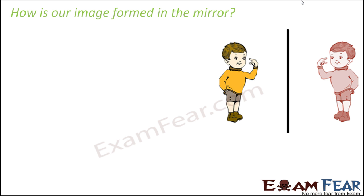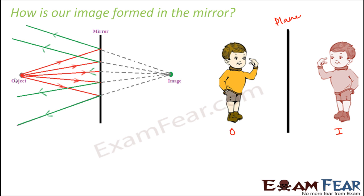Based on the concepts we saw earlier, let us see how exactly an image is formed in the mirror using rays of light. This is the object — a boy standing in front of the mirror. The incident rays, shown in red, strike the mirror and after reflection they get reflected as shown in green. Looking at the green rays, they do not seem to meet each other; they are diverging. However, if we extrapolate them in the backward direction, they appear to meet at a point.